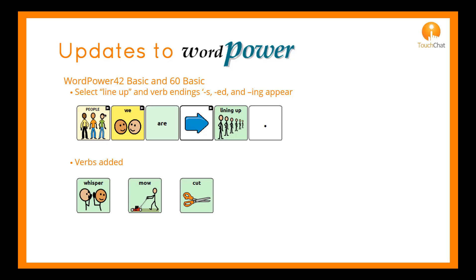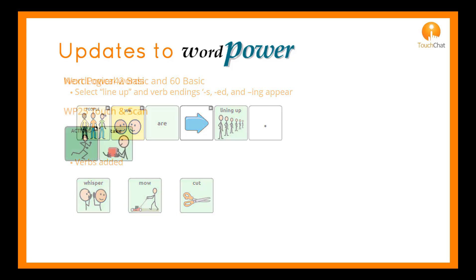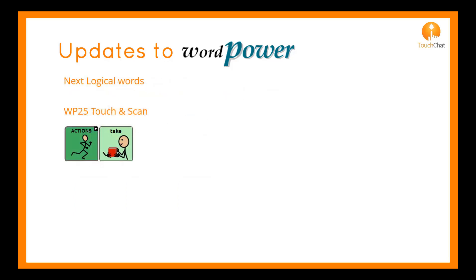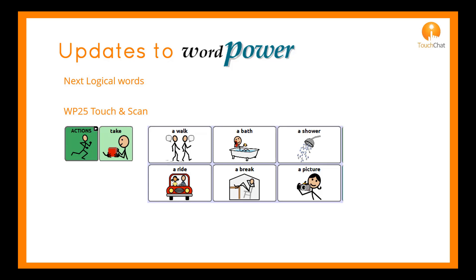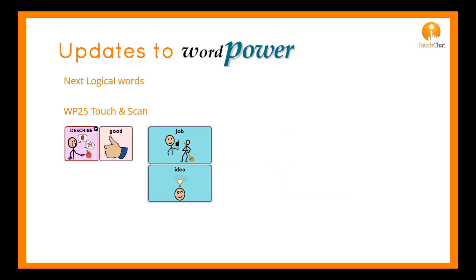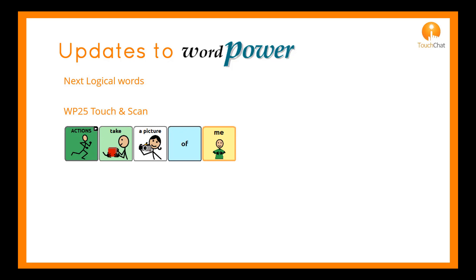A few verbs were added: whisper and cut. Next logical words were added to 25 Touch and Scan. Take is followed by options for a walk, ride, break, picture, bath, and shower. Good is followed by job and idea, so you can say 'that is a good idea.' Take a picture offers 'of me' as a next logical word. And 2019 was fixed in this file.